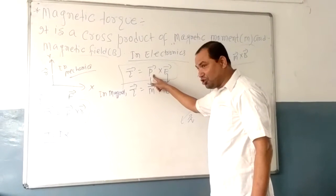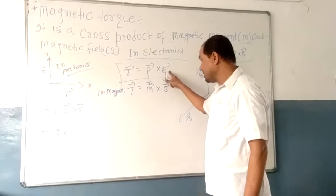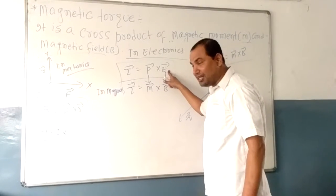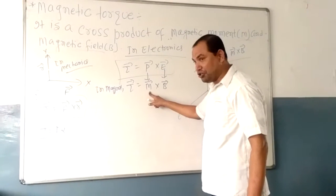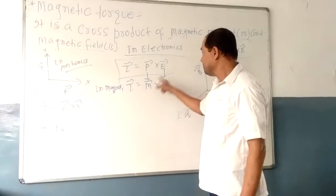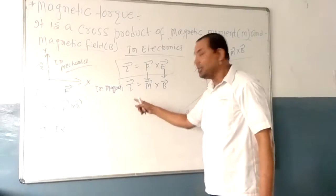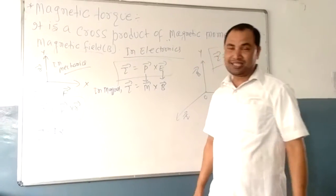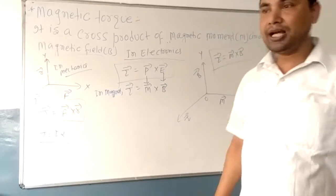Here, electric dipole moment is denoted by P and electric field by E. Similarly, magnetic dipole moment is denoted by M and magnetic field by B. This formula is similar to the formula in electrostatics.